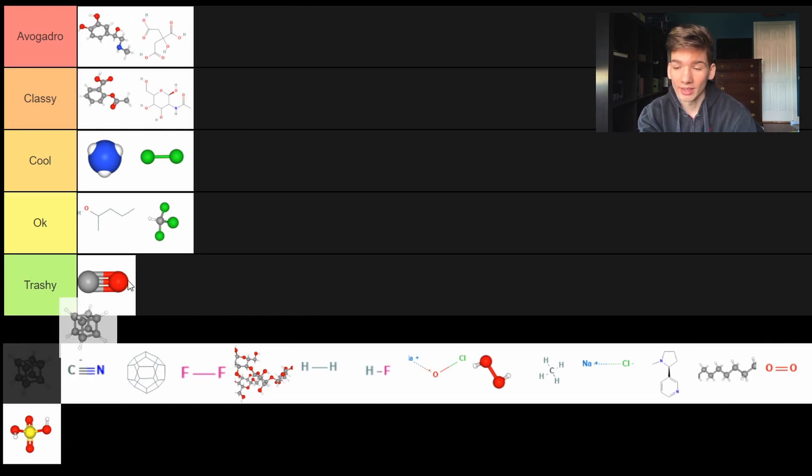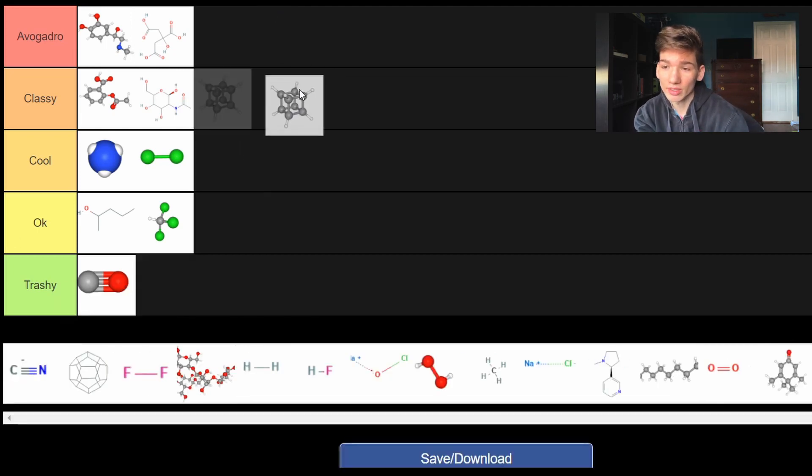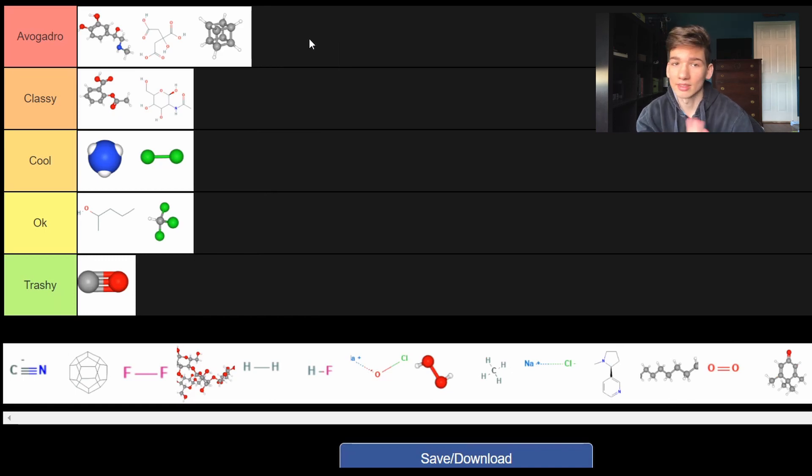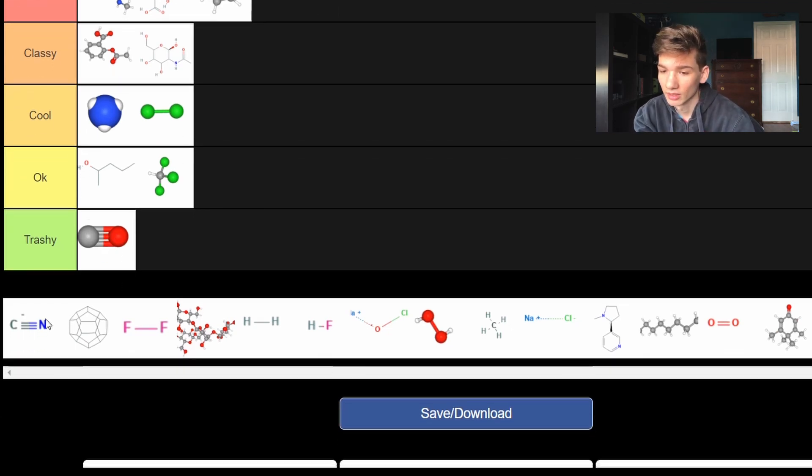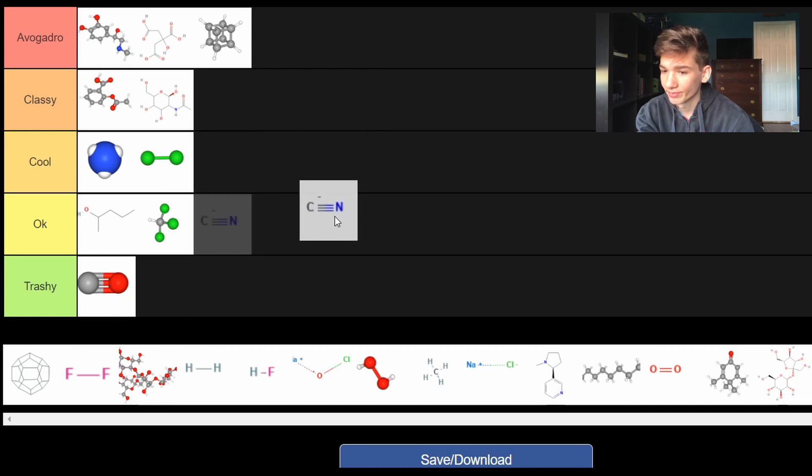Next we have Cubane. Named after the way it looks. It's a cube. Top tier. Next we have Cyanide. This is the Cyanide Ion. Kind of poisonous. It's okay.